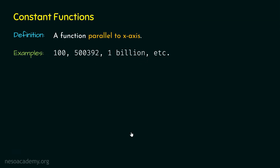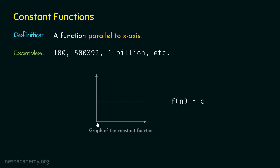Here is the graphical representation of the constant function. In this graphical representation, we can observe that as the size of the input increases, the function remains the same. This is the reason why these functions are called constant functions — they remain the same as the size of the input increases and they are parallel to the x-axis.